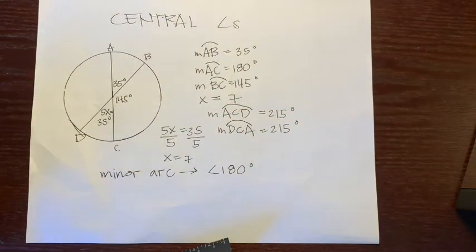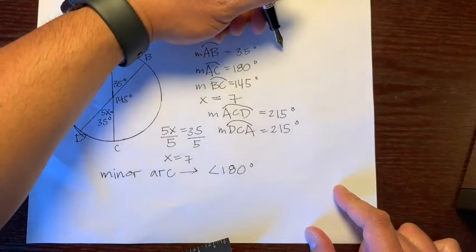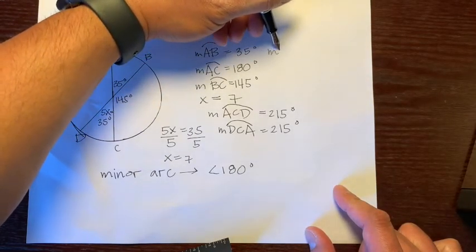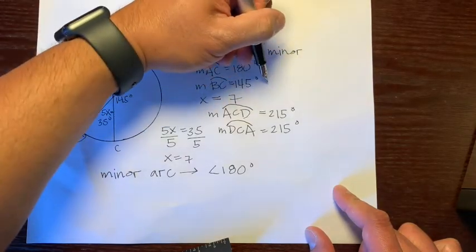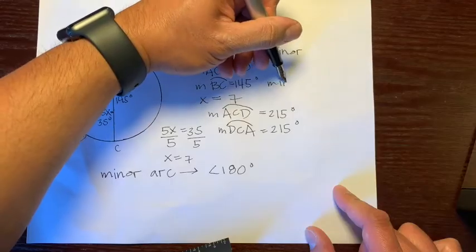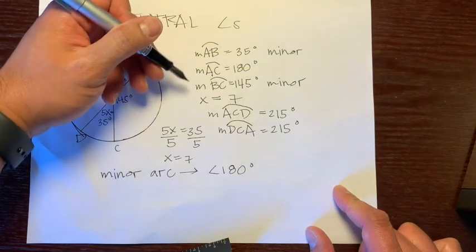So let's look at, let's figure out which one the minor arcs are. This one is less than 180 degrees. So this is a minor arc. This is a minor arc. And that's just a variable. So we're not even going to look at that one.